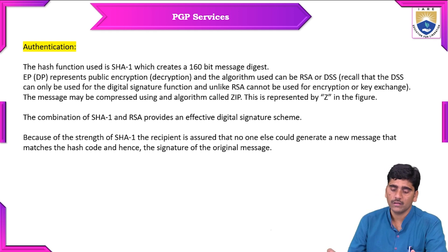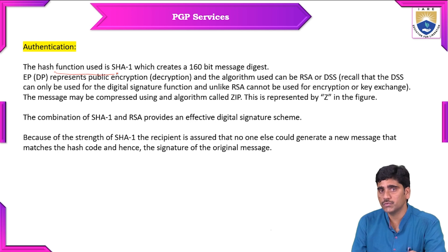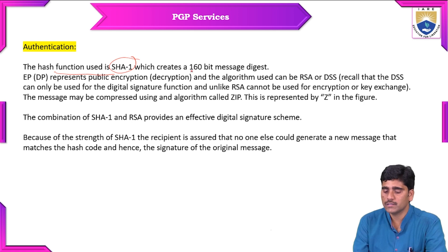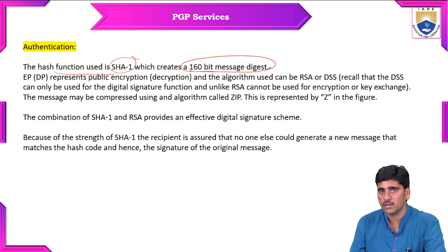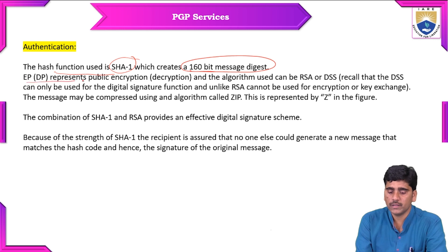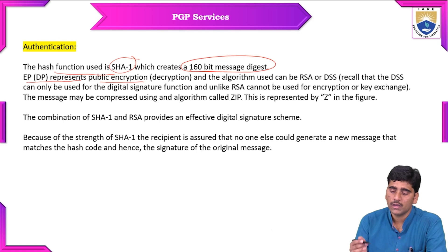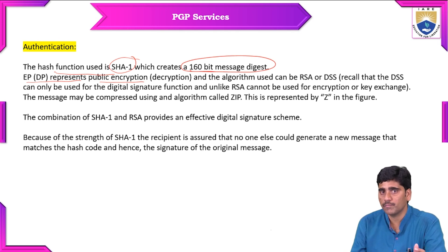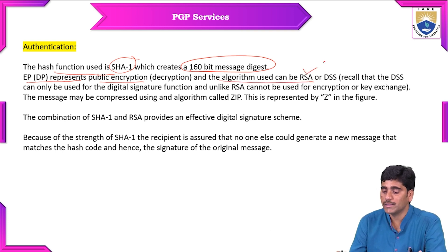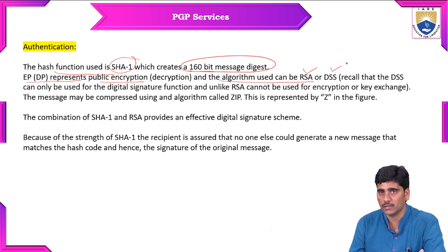What is meant by authentication? The hash function is used. SHA-1 is the algorithm which creates a 160-bit message digest. EP (encryption process) represents public encryption or public decryption. The algorithm used can be either RSA or DSS.